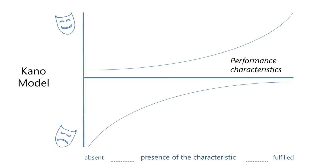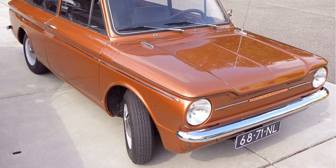The insight that Kano had was to point out that there are other factors at play. Firstly, he called them must-be quality — nowadays we tend to call these the hygiene factors. These are things that customers won't talk about in market research, simply because they take them for granted. They assume the product will have certain features. In the car analogy, things like disc brakes and radial tyres fall in this category. Customers don't ask for them because pretty much every new car on the road today has those features. On the other hand, if we tried to market a car with drum brakes or cross-ply tyres, customers would definitely not be happy — they would perceive that as a very down-market thing to do.